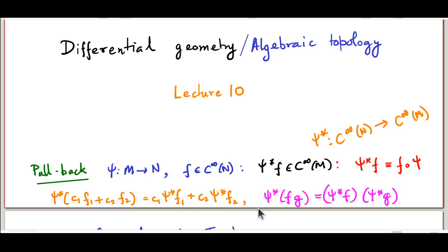Another very important property, which again follows rather trivially from the definition, is that the pullback of the product of two functions f times g is actually the product of the individual pullbacks. That is, you can pull back f to form a function on M — shy-star f — and pull back g to form a function on M again, and their product is going to be the pullback of the product function fg.